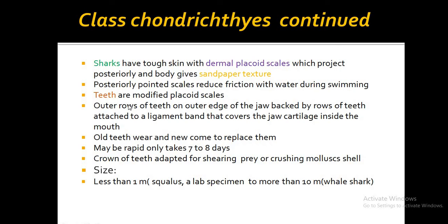The dermal placoid scales in sharks are modified and form the teeth. Shark teeth are arranged in two rows — an outer row and an inner row. The teeth are positioned in the jaw. They are replaced every 7 to 8 days, with old teeth being shed and new teeth growing in. These teeth are used to cut and crush prey.